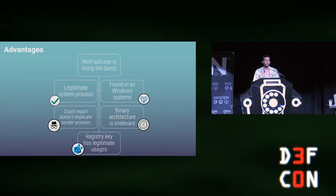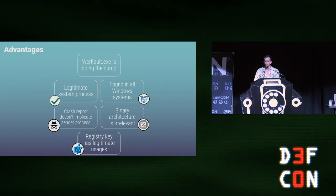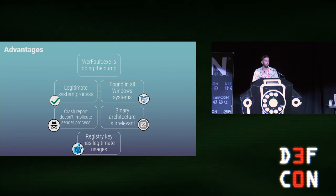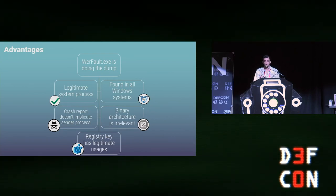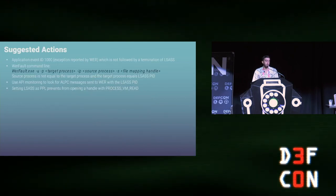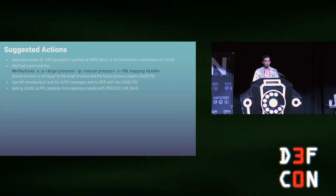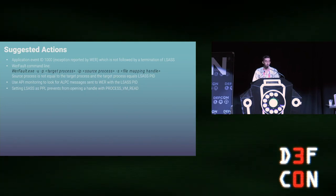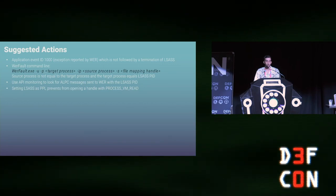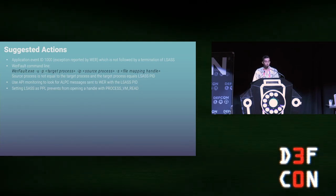One thing that can be used to detect this attack is the command line of WerFault.exe — it specifies the ID of the process being reported on and the process that sent the request. If the target is LSASS and the source process isn't, that is a strong indication of this attack. As for advantages: WerFault does the dump and is a legitimate system process on every Windows version; the crash report doesn't mention our process; the tool can be compiled as 32 or 64 bits; and the registry key DumpType has legitimate usages. Suggested defender actions: look for event ID 1000 specifying an exception inside LSASS not followed by LSASS termination; monitor WerFault command lines; use API monitoring to look for LPC messages sent to WerFault with the process ID of LSASS; and depending on the network, set LSASS as a PPL.